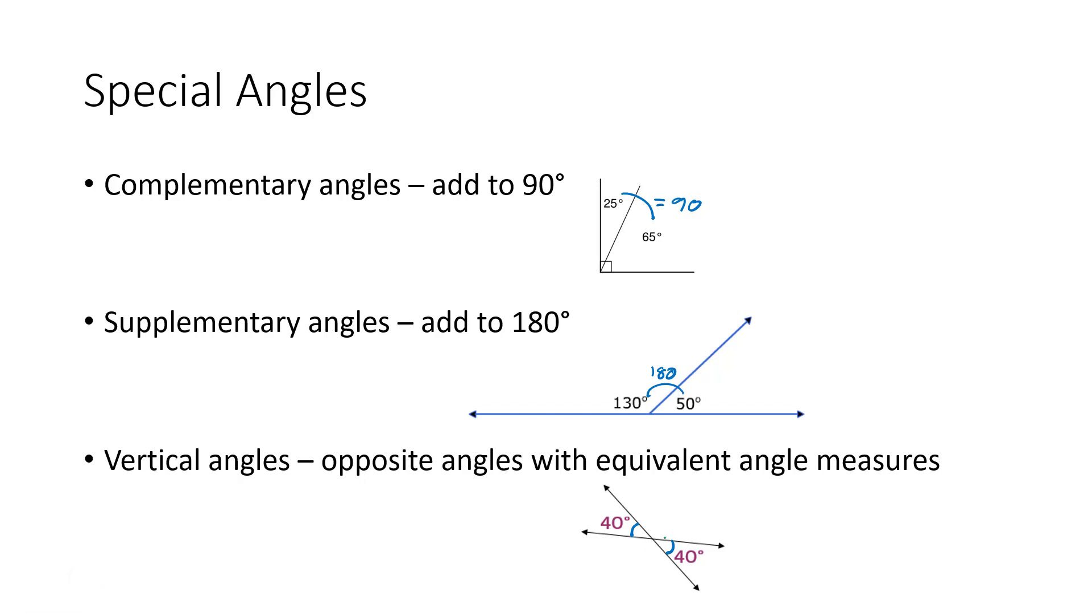And in fact, we've even got this obtuse angle out here. Notice the obtuse angle combined with the 40 degree acute angle makes a straight line. They're supplementary. So they're going to add to 180 degrees. So 40 plus what is 180? 40 plus 140 is 180 degrees.